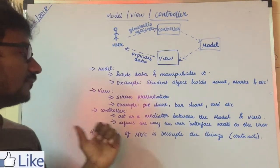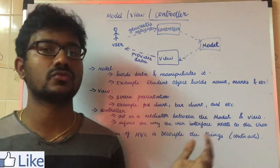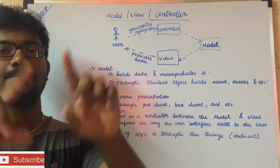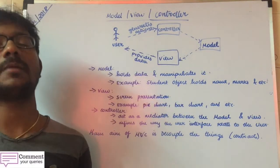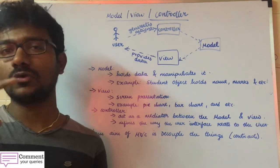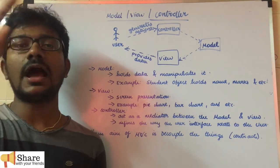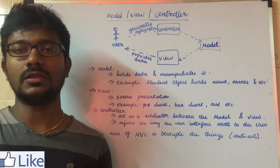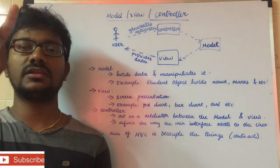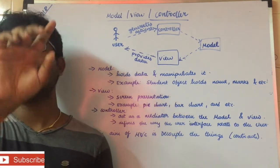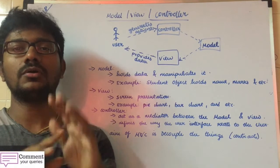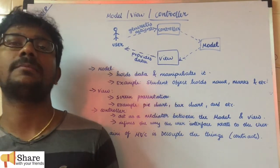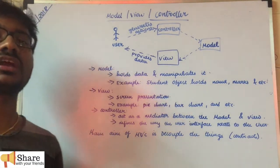The second point is: the controller defines the way the user interface reacts to the user. For example, if we need to do a paint application, we can show the action of the drawing. If we move on and try the action, it will change the lines. We can see the controller deciding what we do.